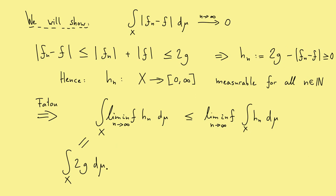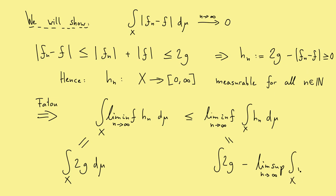Now let's look at the right-hand side. The integral of hn is linear, so we get two integrals: one of 2g and one of |fn − f|. For the first part, the liminf does not matter, so we write down the integral of 2g. For the second part we have to be careful: we are subtracting something positive and looking at the liminf, which means to get the liminf out we have to subtract the limsup — or in other words, to get the smallest outcome we subtract the largest possible number. So we have the limsup of the integral of |fn − f| dμ.